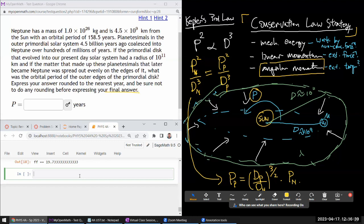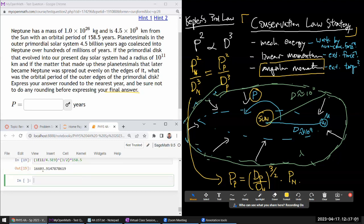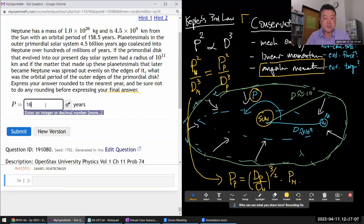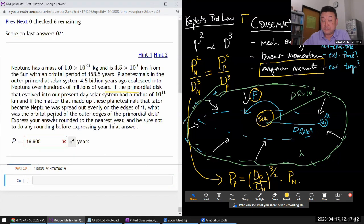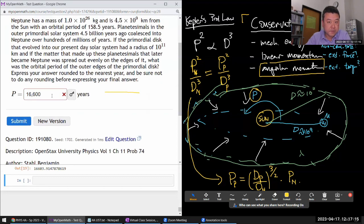So the distance of the planetesimals is 10 to the power of 11 divided by distance of the Neptune is 4.5 times 10 to the power of 9. And kilometers will cancel out of this ratio raised to the power of three halves times the period of Neptune, 158.5 years. So that's 16,600 years. It says that's not correct.